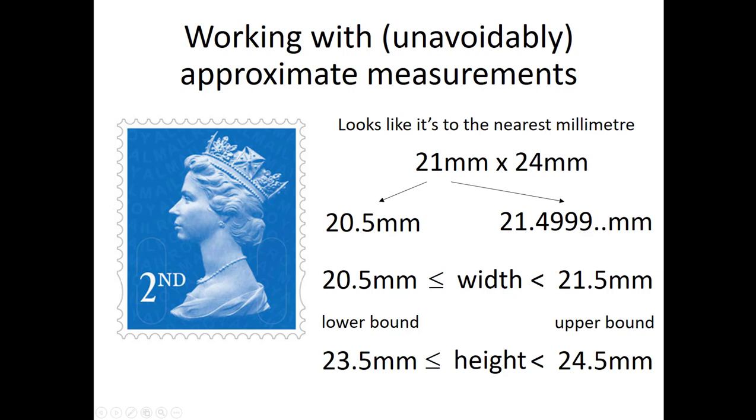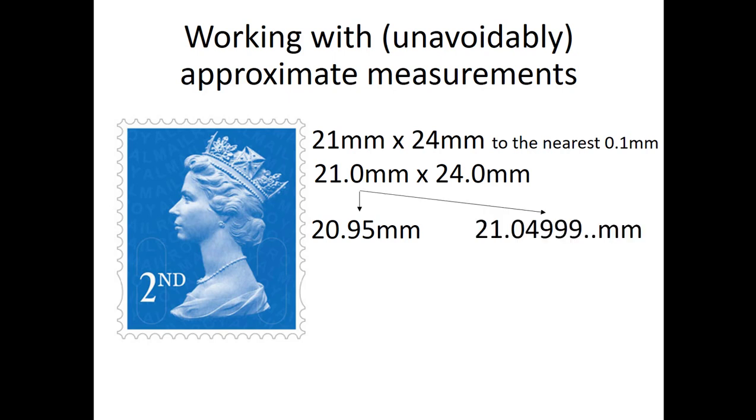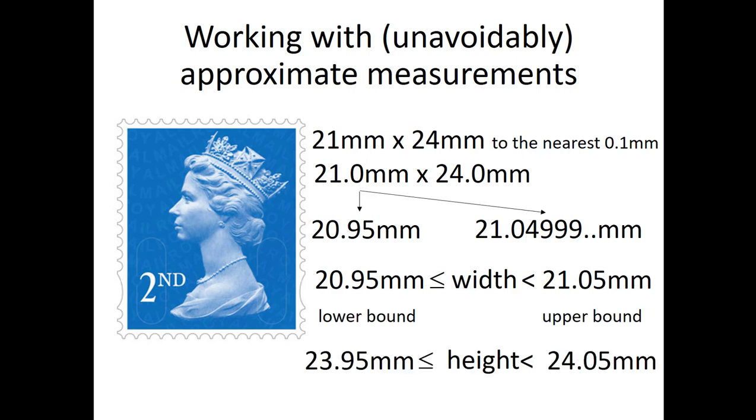Now, in fact, the post office are a bit fussier than this about measurements, and they like to get things really very accurate indeed. So let's suppose we're told we've measured this to the nearest 0.1 millimetres. It is definitely 21 by 24 millimetres. Well, no, it's not exactly that. All we know is that it's 21.0 millimetres by 24.0 millimetres to the nearest 0.1. But that 21.0 could be as little as 20.95 and could be as much as 21.049999, giving us lower and upper bounds of 20.95 millimetres and 21.05 millimetres. And in the same way, for our height, we have lower and upper bounds of 23.95 and 24.05.